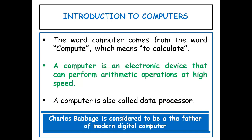Coming to digital computers — the word computer comes from the word 'compute', which means to calculate. Charles Babbage invented the computer in the year 1832. A computer is an electronic device that takes data as input from the user, processes the data, and provides useful information known as output. A computer is also called a data processor because it can store, process and retrieve data whenever desired.